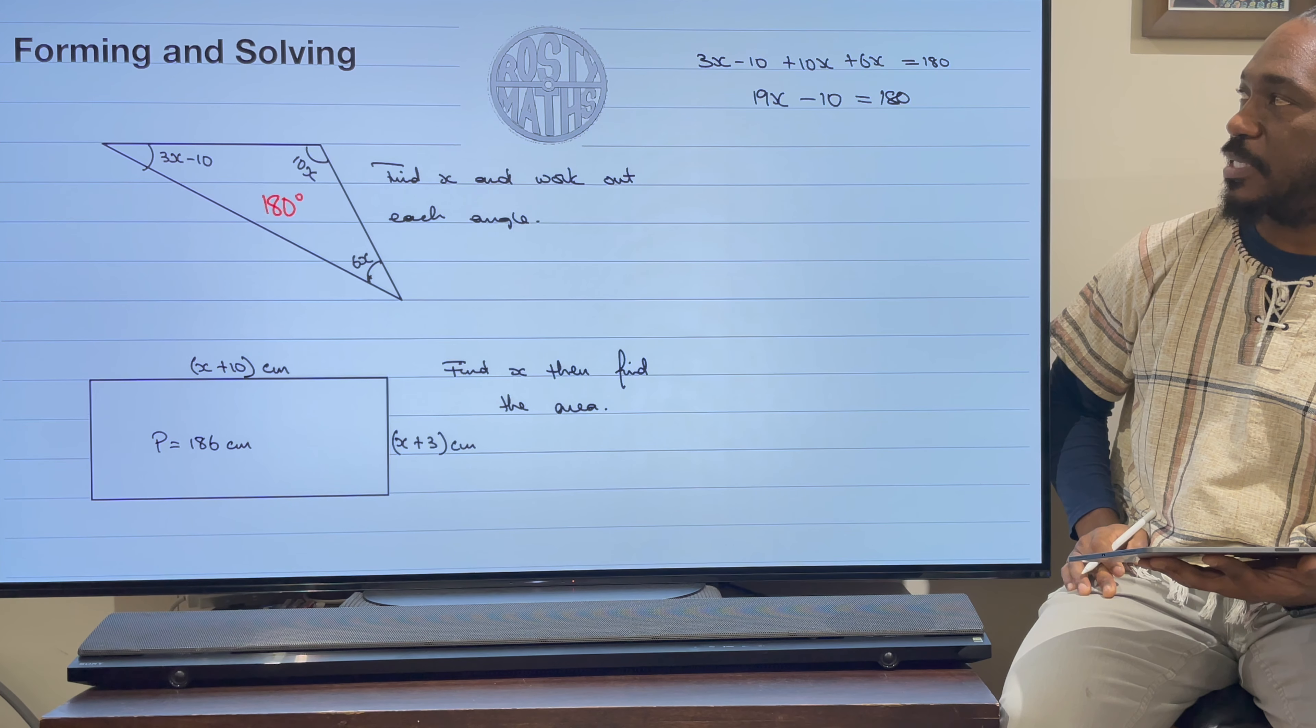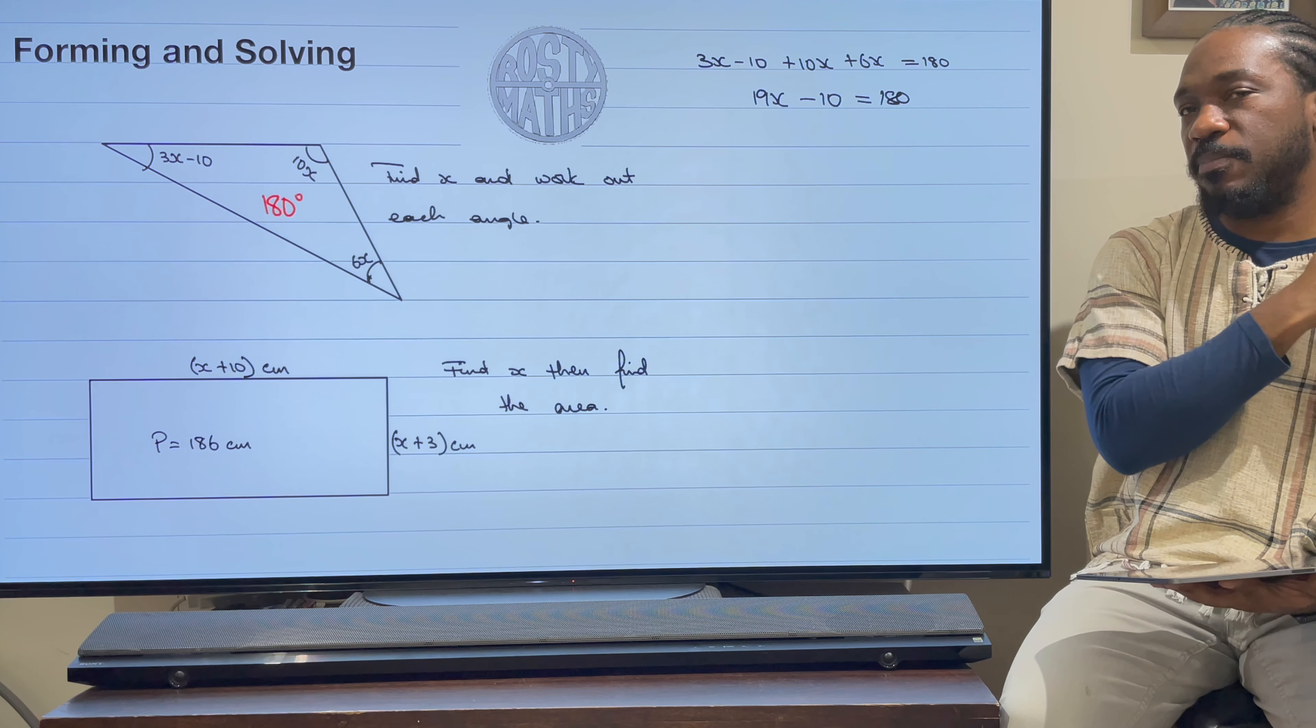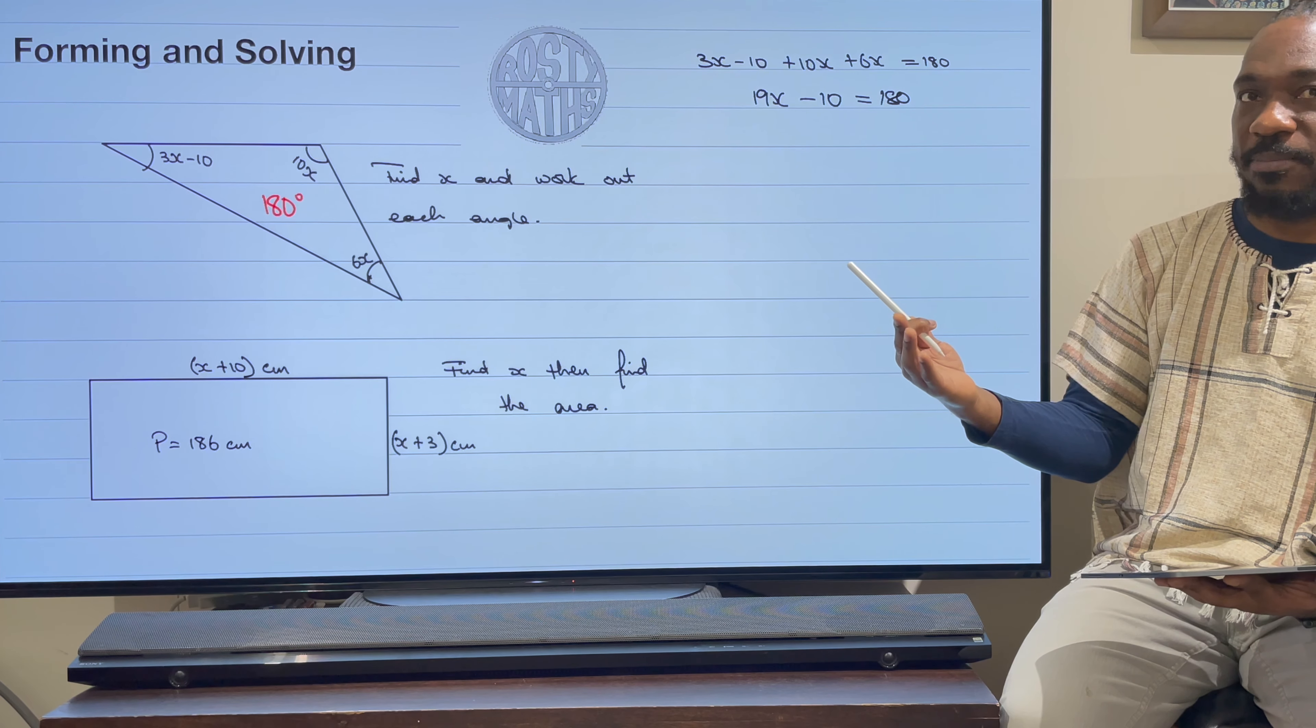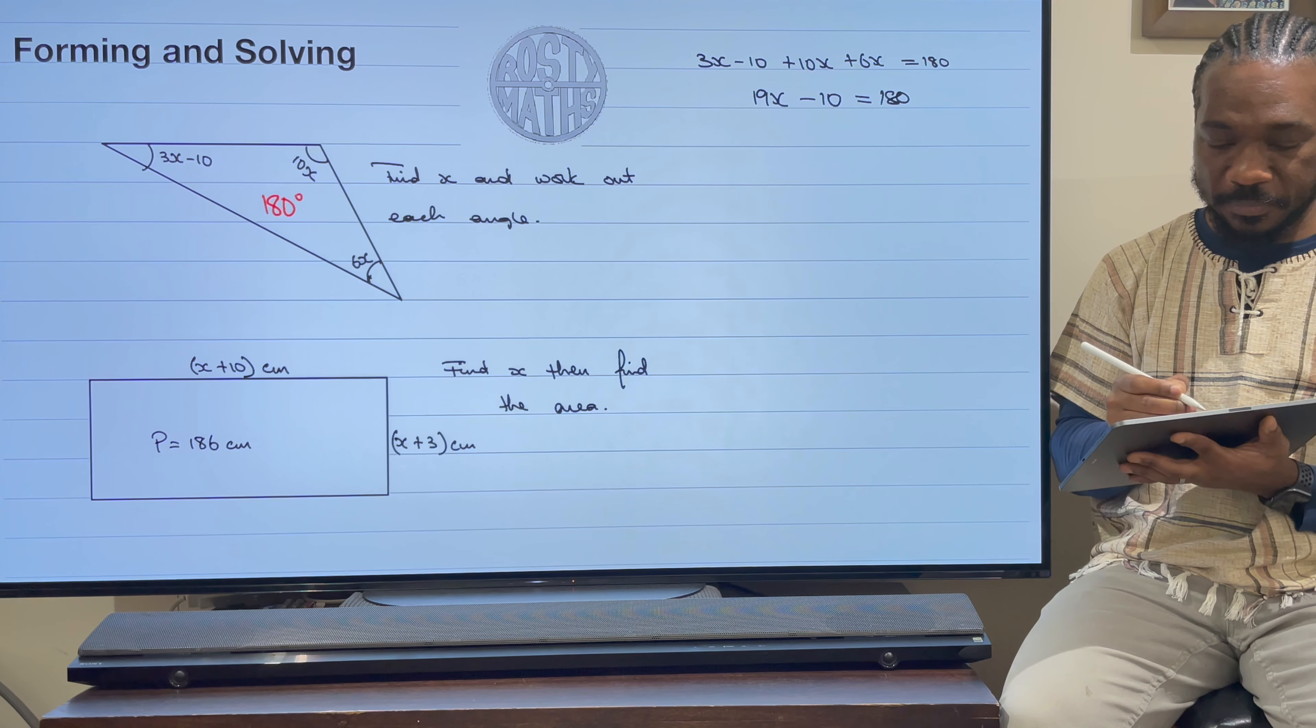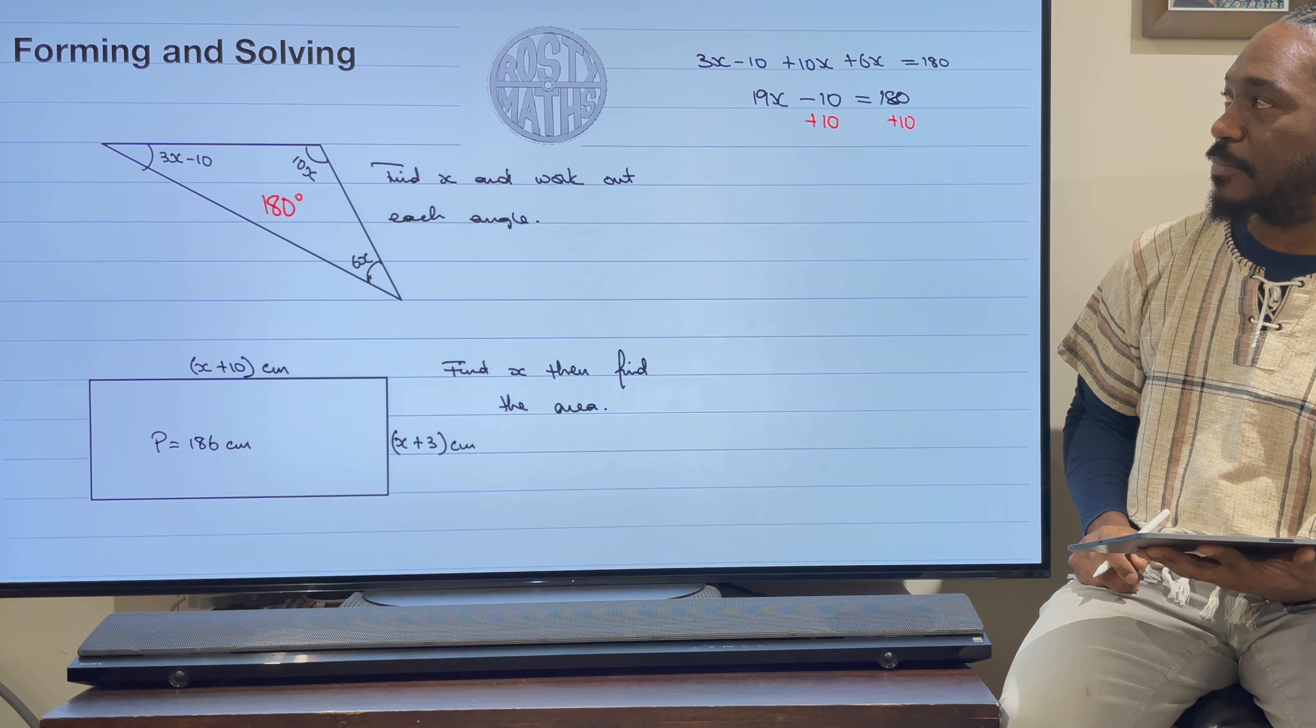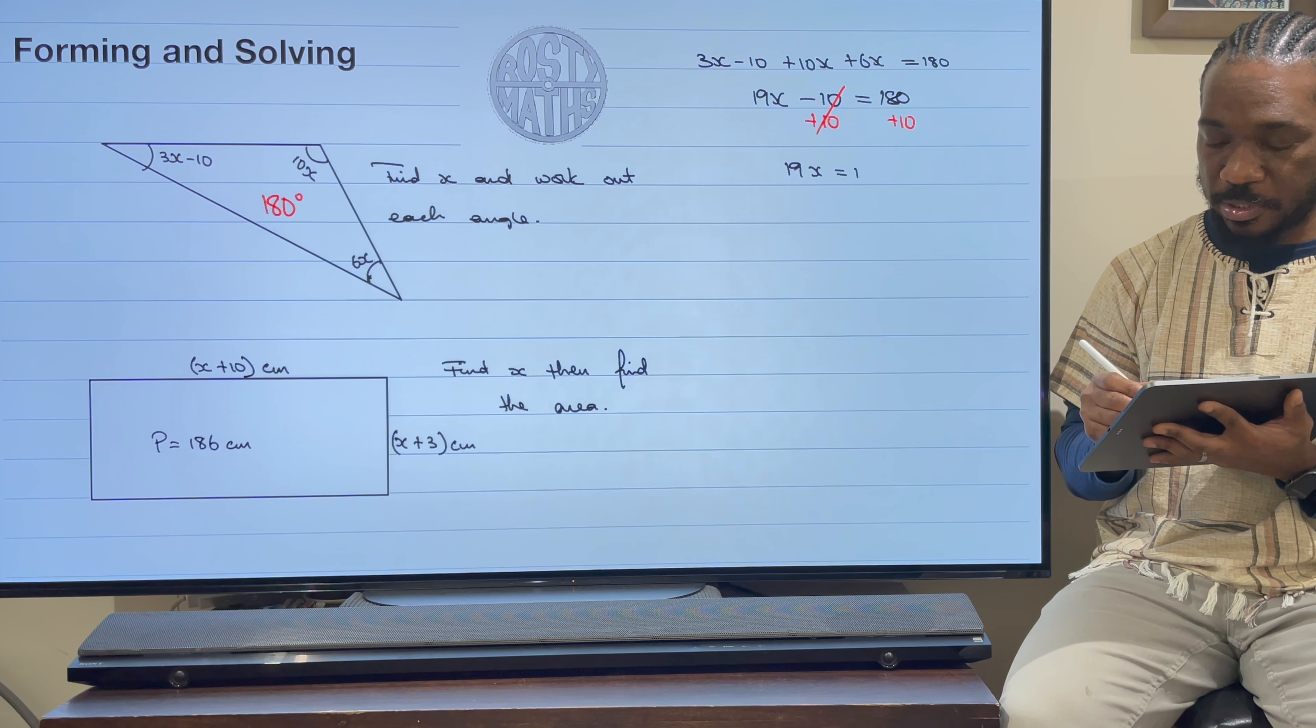So the next step is that now we need to add this 10 because we're going to use the balancing method. Check out my other videos on how we solve using the balancing method to solve an equation. So I'm going to add 10 here, add 10 on this side, add 10 on that side. These two 10s are going to cancel out, so 19x is equal to 190.